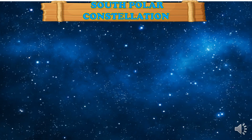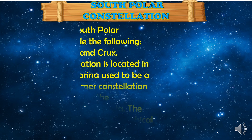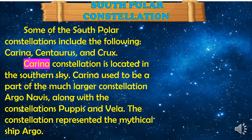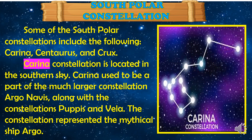We also have the South Polar constellations. Some of the South Polar constellations include Carina and Argo Navis, along with the constellations Puppis and Vela. The constellation represented the mythical ship Argo Navis.